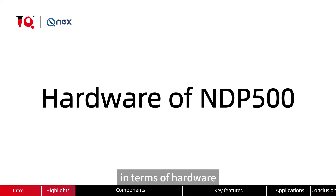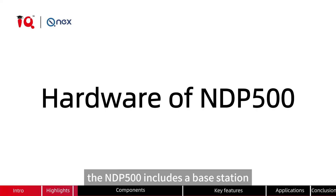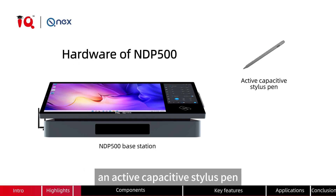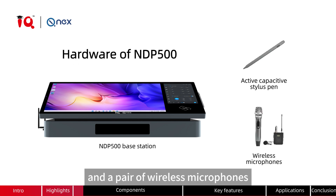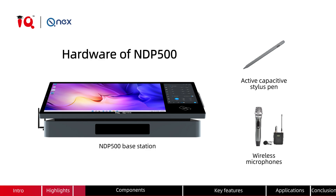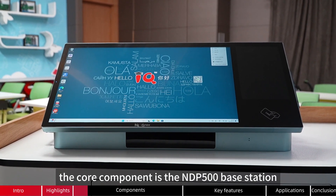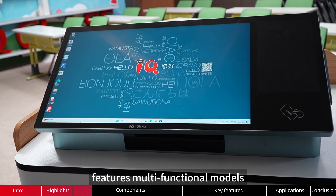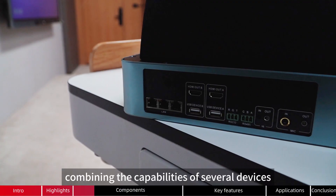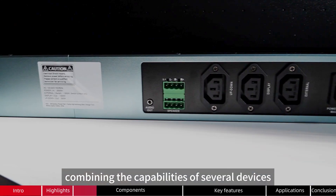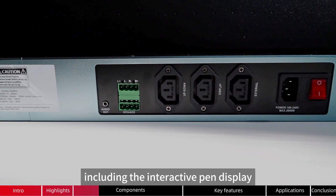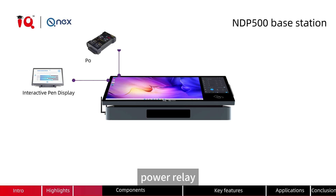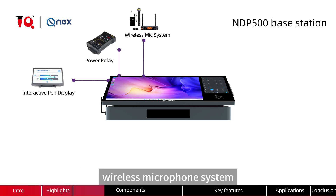In terms of hardware, the NDP500 includes a base station, an active capacitive stylus pen, and a pair of wireless microphones. The core component is the NDP500 base station, which features multi-functional modules, combining the capabilities of several devices, including the interactive pen display, power relay, and wireless microphone system.